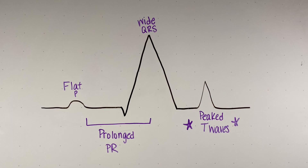Of these EKG findings, the peaked T waves are probably the most important and most common sign. The pathology of these signs is very complicated, so we won't go into detail here, but to remember the T wave, just think: high potassium equals high T wave.